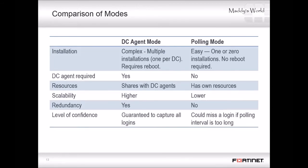This table summarizes the main differences between DC agent mode and polling mode. DC agent solutions are usually more complex — it requires not only a collector agent, but also a DC agent per DC. However, it's more scalable because the workload is distributed among all of the agents. Additionally, this deployment offers redundancy because you can have more than one collector agent. And because the DC agent is hosted on the DC itself, all login events will be captured and recorded. In comparison, if you use polling, quick login and log off events can sometimes be missed, requiring the user to authenticate more than once.